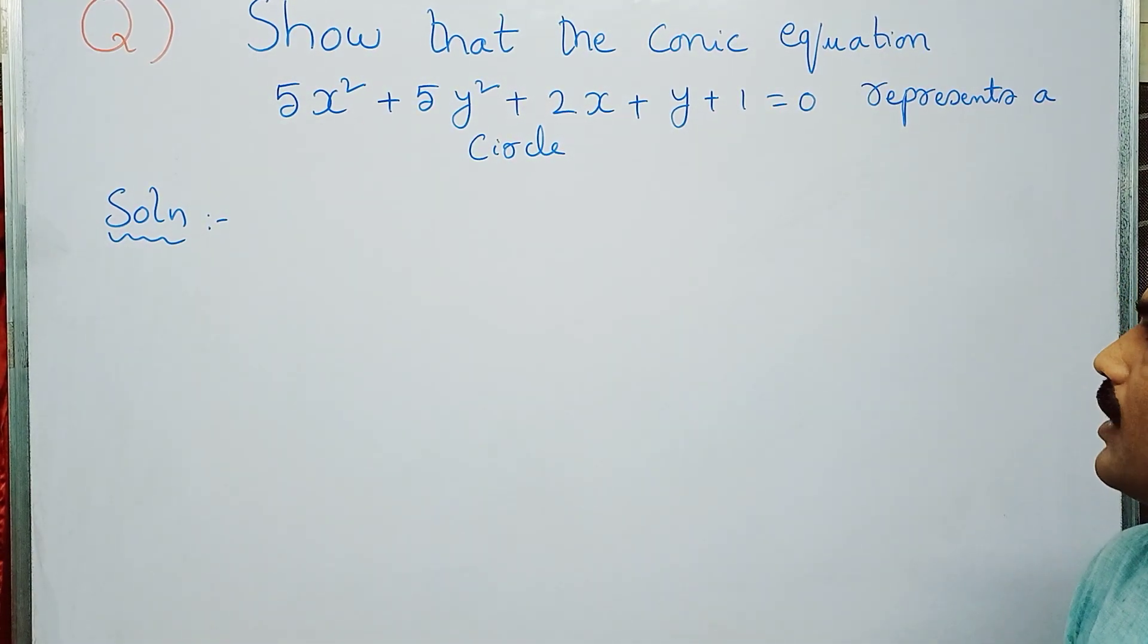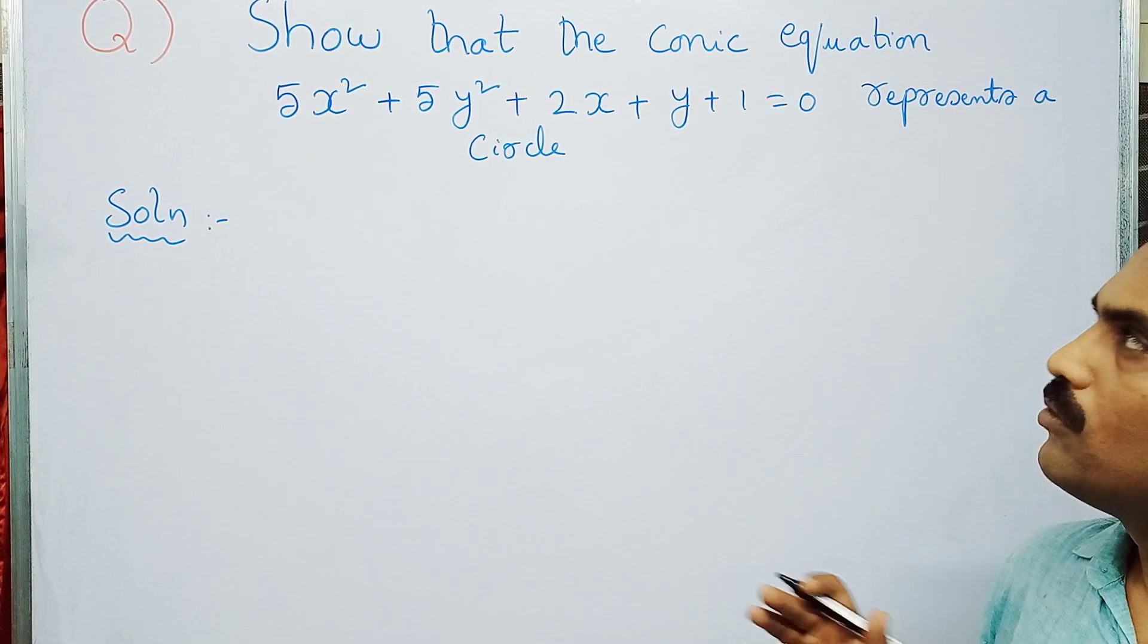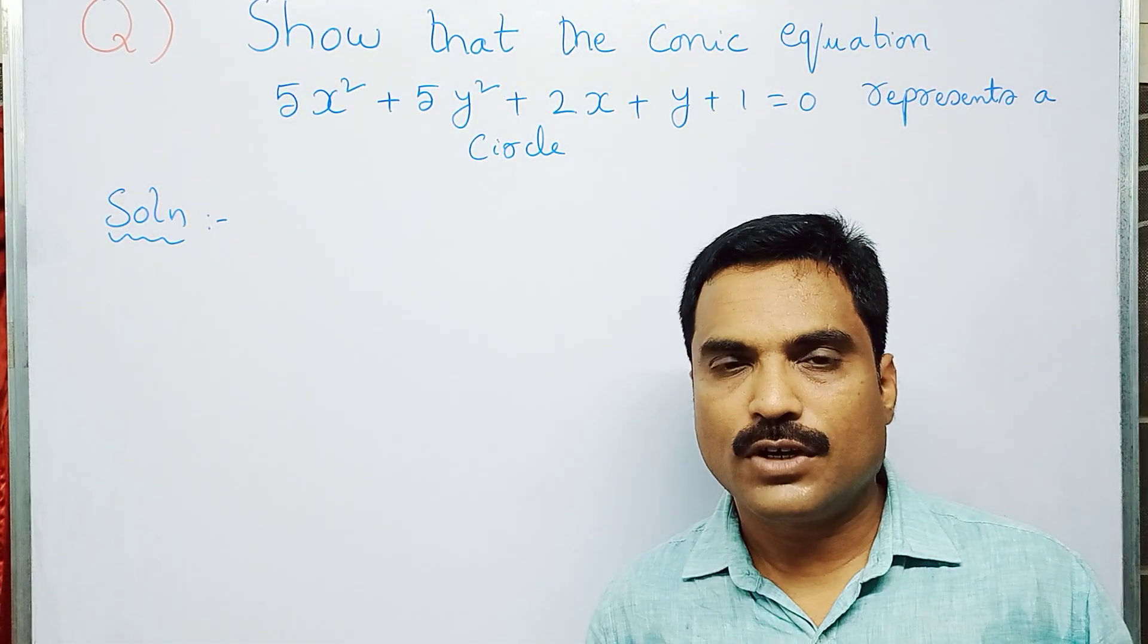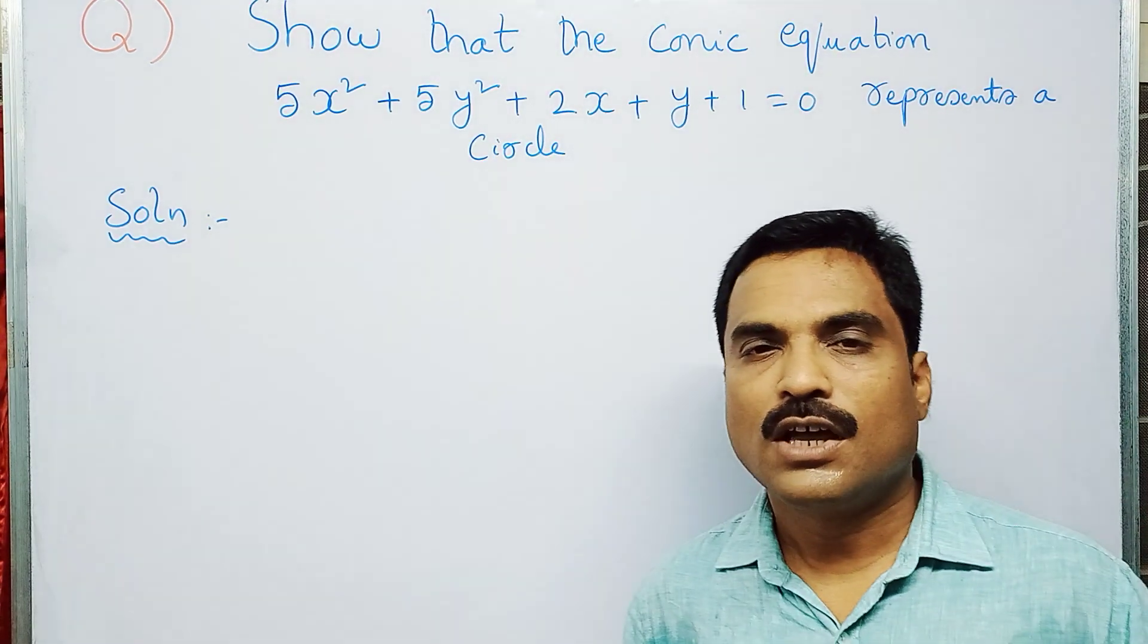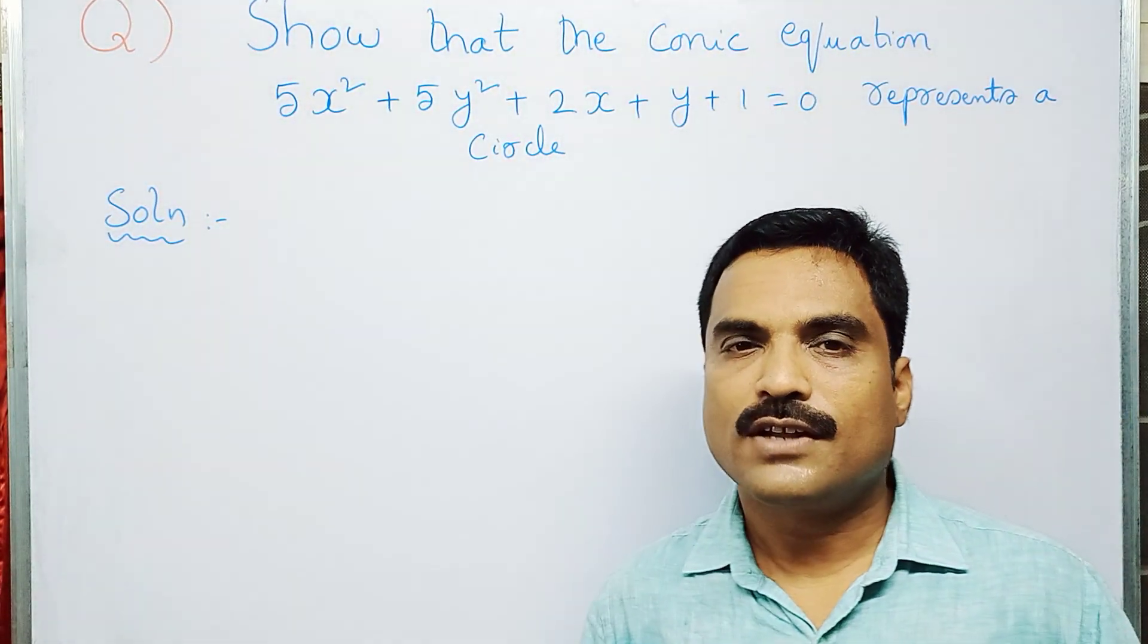Now to solve this problem, first we need to compare this given equation of conic with the general equation of conic and obtain the values of a, b, and h. If h = 0 and a = b, then you can say that the given equation of conic represents a circle.